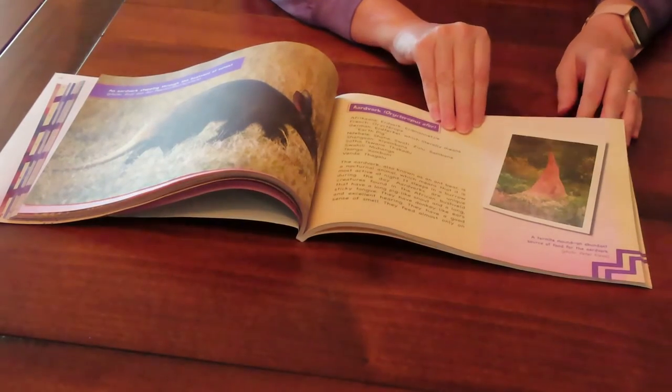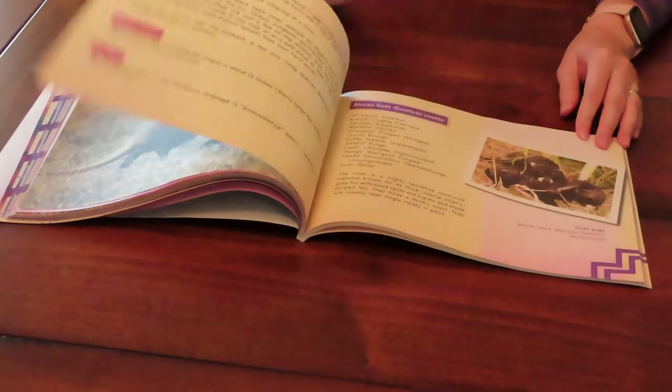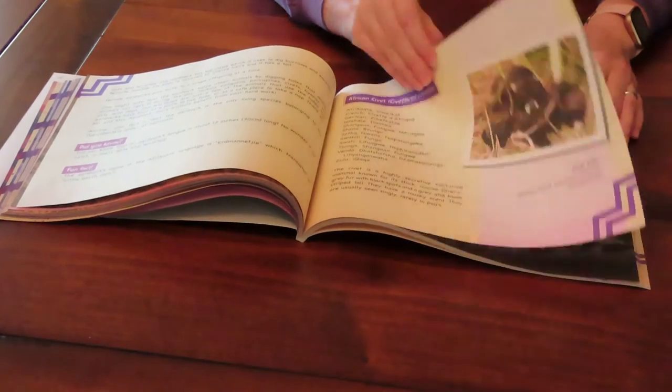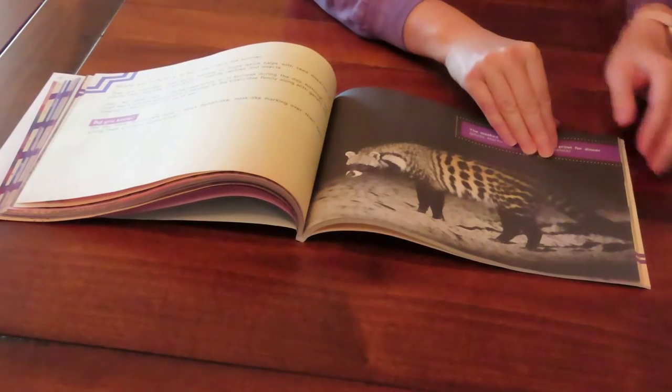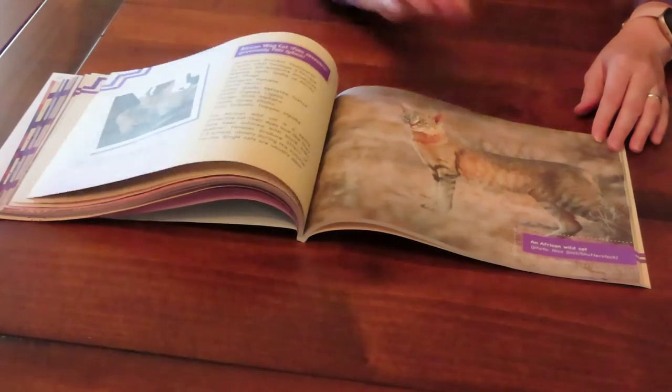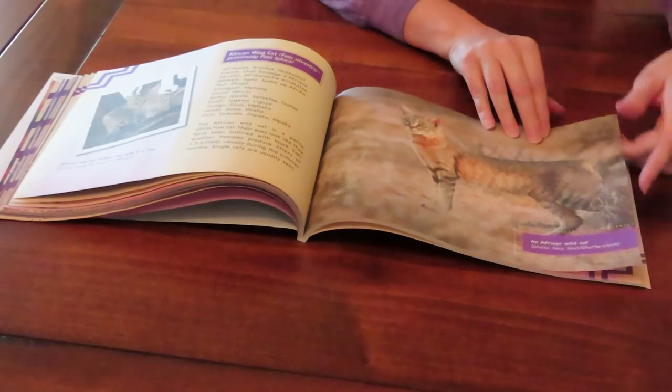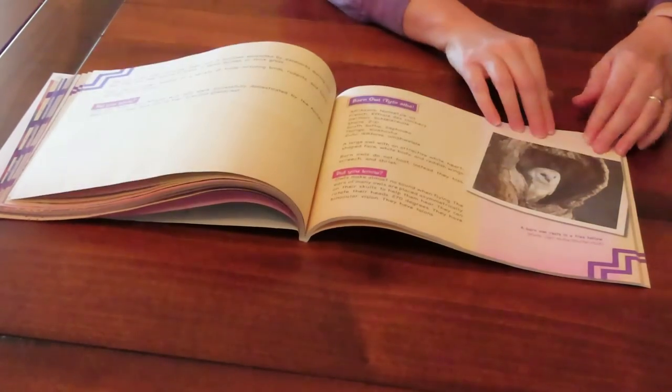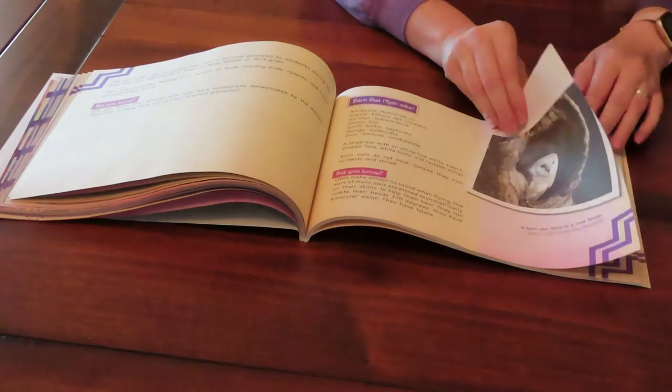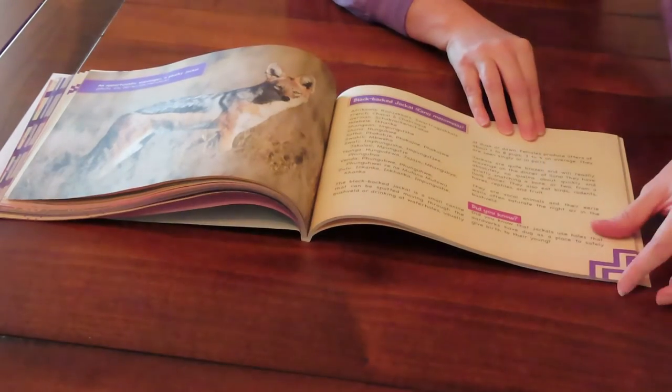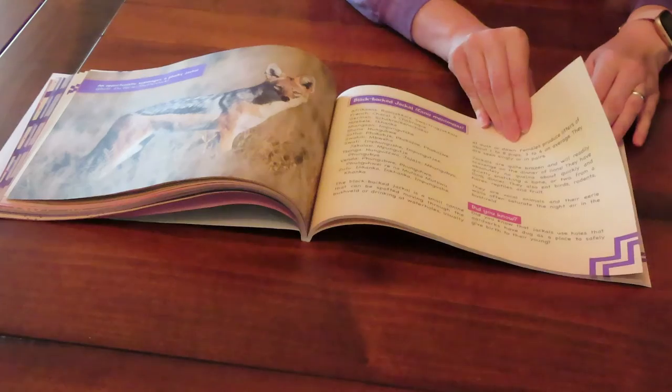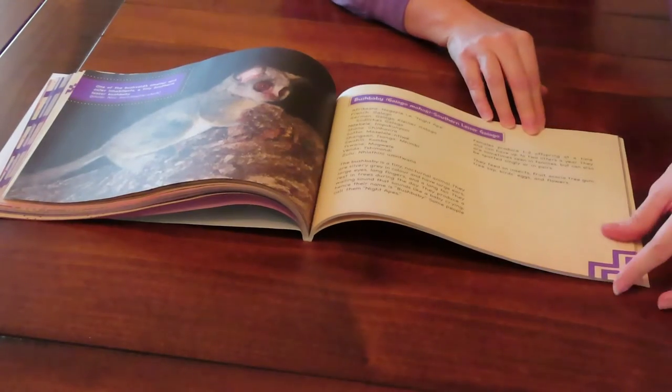We learn about the aardvark, civet, African wildcat, barn owl, blackback jackal, and bush baby.